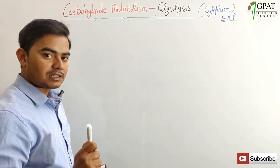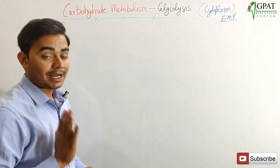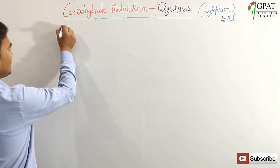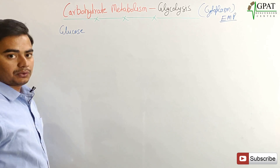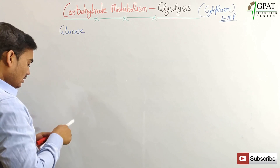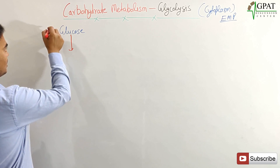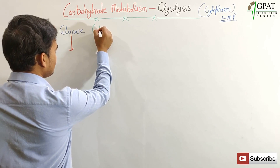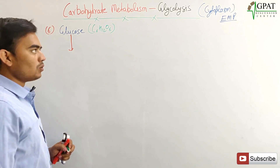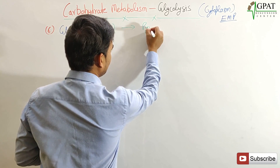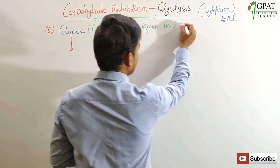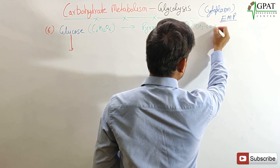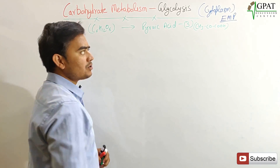In glycolysis, there are a total of 10 steps involving 10 enzymes. Glycolysis starts from a glucose molecule, which has six carbons (C6H12O6). This glucose is converted into pyruvic acid, and pyruvic acid has three carbons (C3, with structure CH3-CO-COOH).